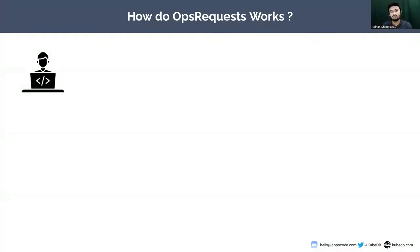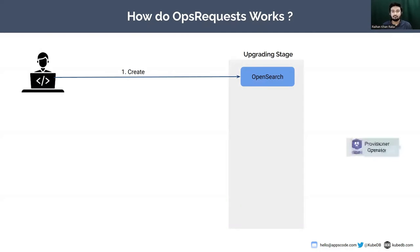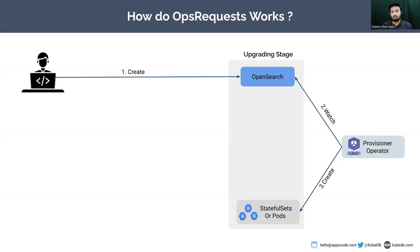When a user provisions an OpenSearch instance with KubeDB, it is watched by our provisioner operator that is created when you install KubeDB into a cluster. As it watches the OpenSearch custom resource, it creates some StatefulSets and pods as you have configured, along with other resources like admin credentials, TLS secrets, and services.